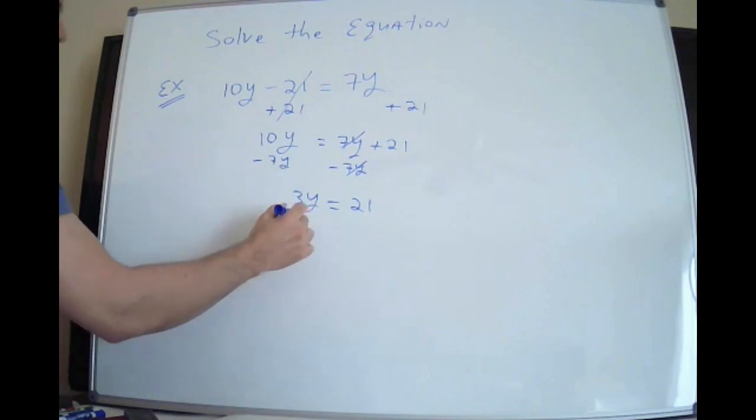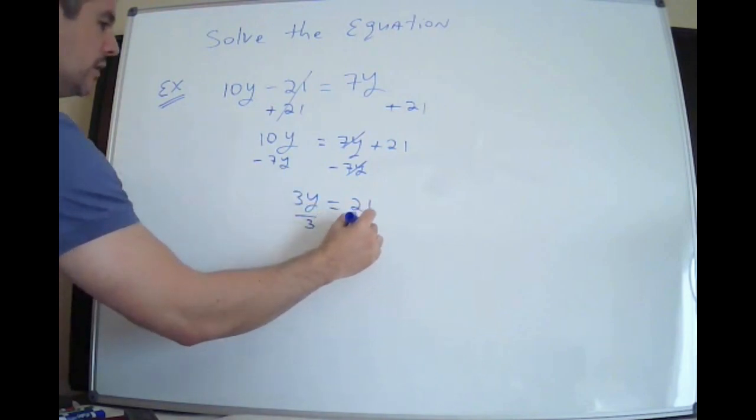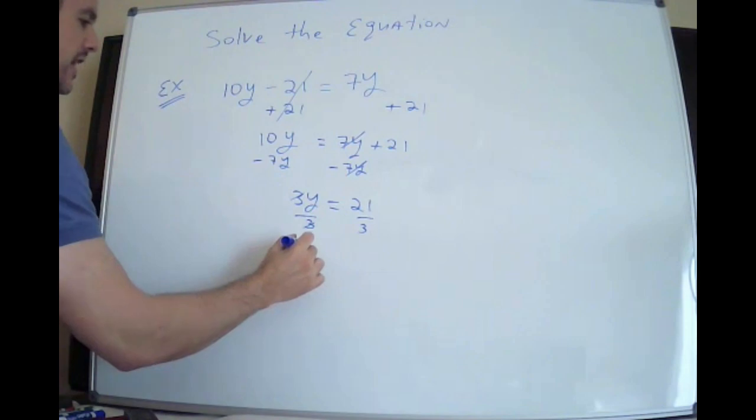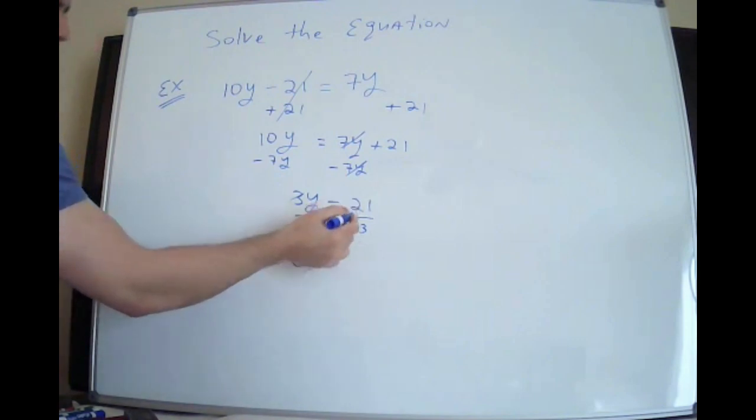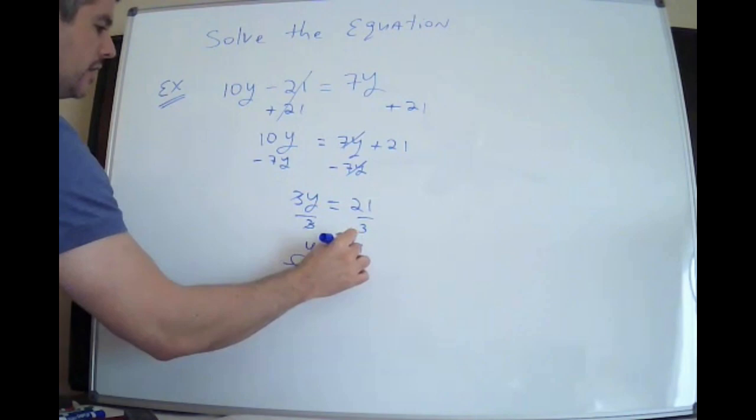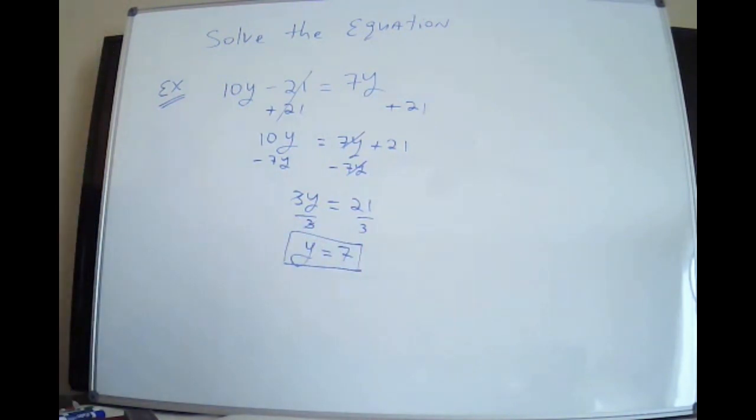Now this is 3 times y. The opposite of multiplication is division, so you divide. Those cross out and make a 1, which is what I want. 21 over 3 is 7. So again, get the letter on the left and the number on the right.